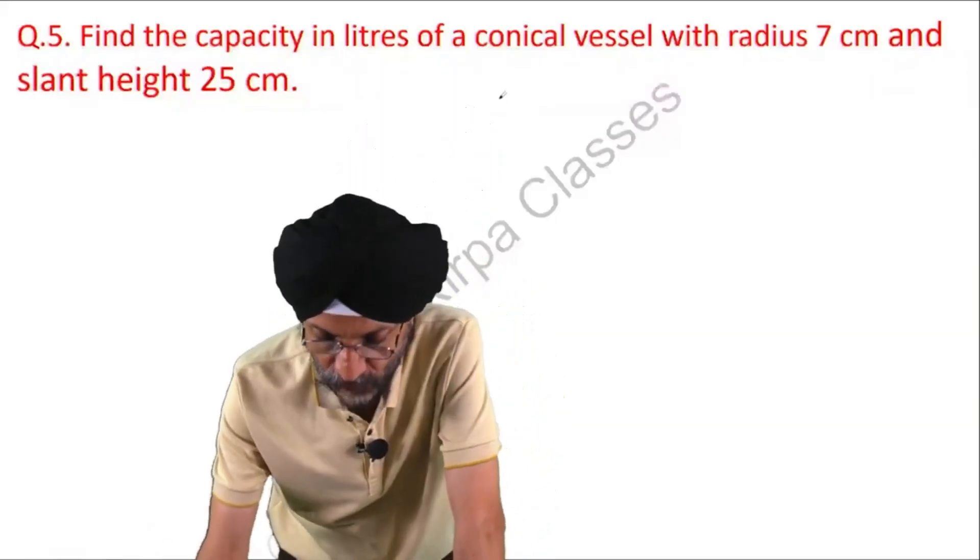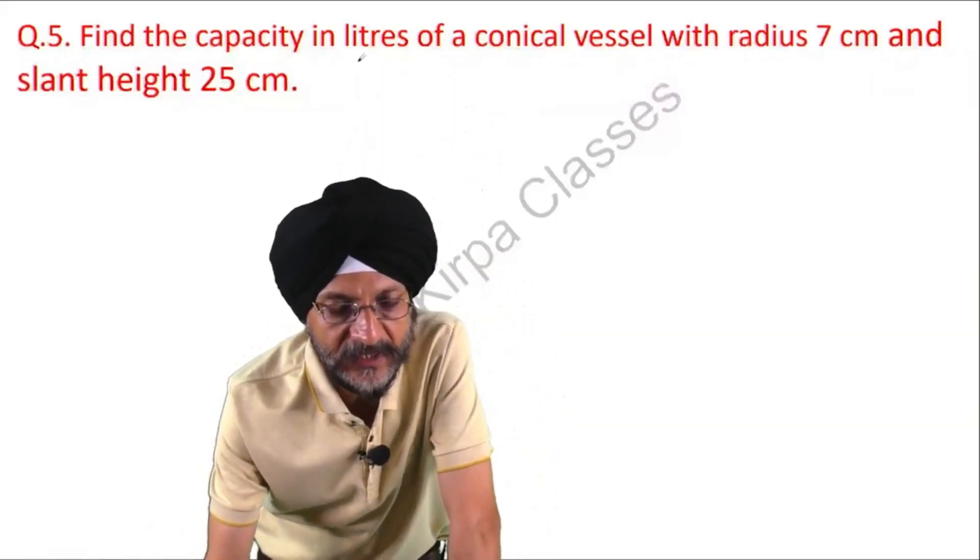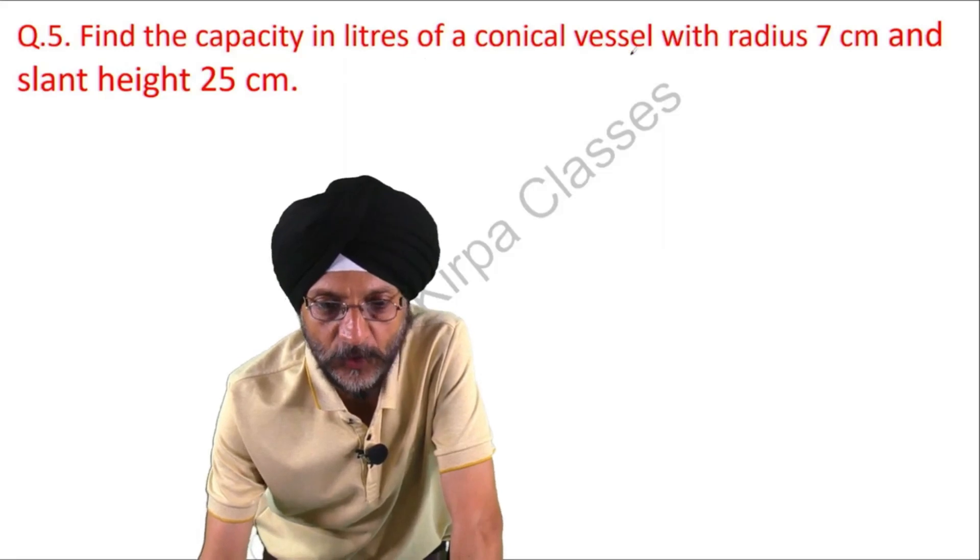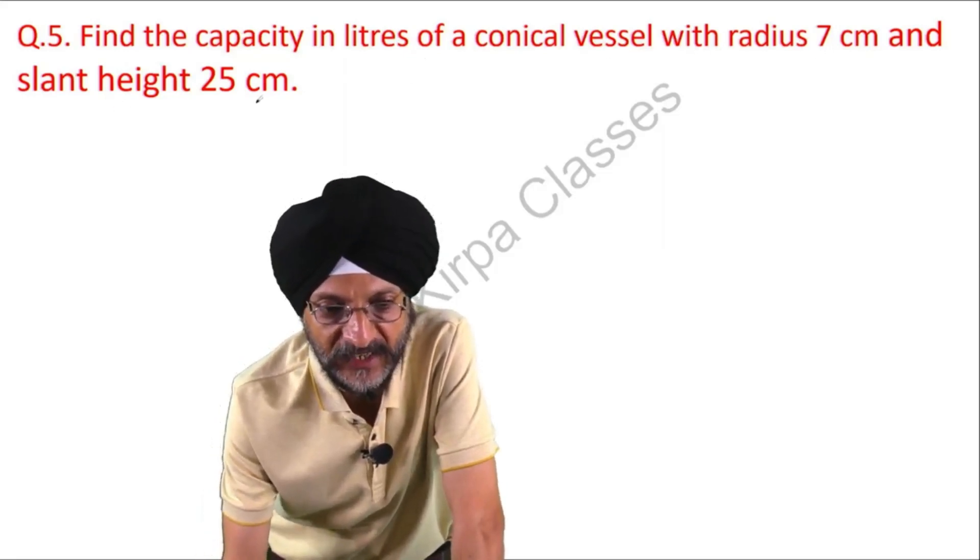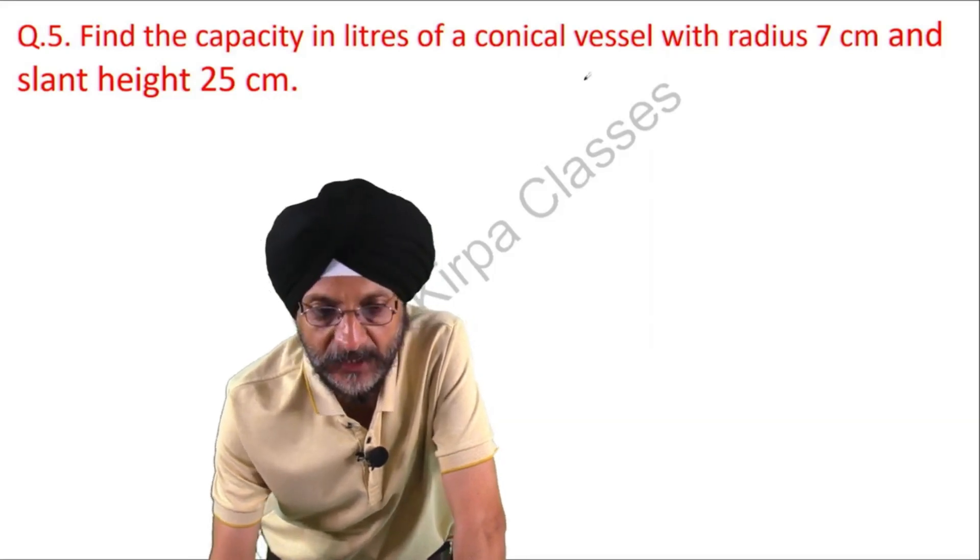Now, the question before us is: find the capacity in liters of a conical vessel with radius 7 centimeter and slant height 25 centimeter.